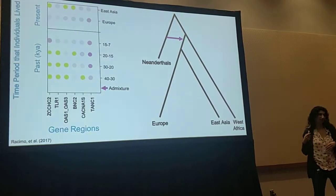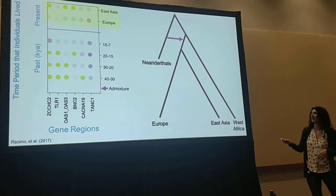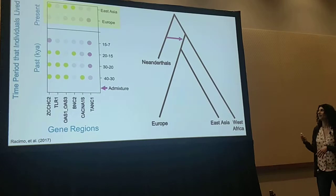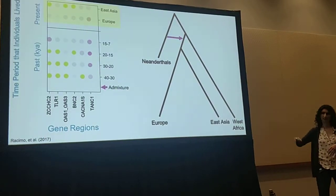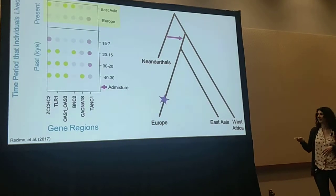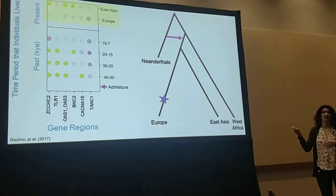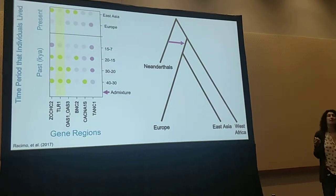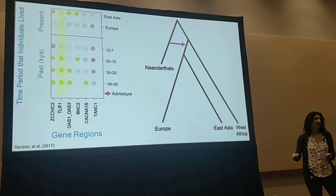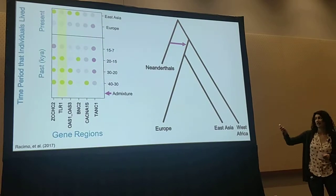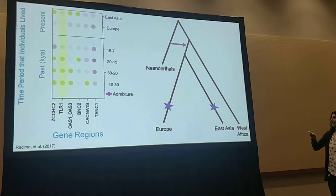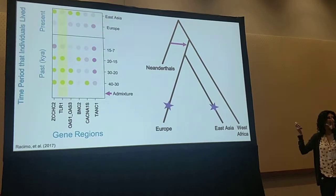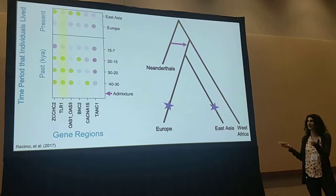Looking at present-day populations, I've selected regions in which we observe adaptive introgression in Europe, but we don't always observe adaptive introgression in East Asia. So it's possible that for those regions, selection must have occurred in Europe after Europeans diverged from East Asians. And even if we observe adaptive introgression in both Europeans and East Asians, if we look in the past, it appears that the Neanderthal allele didn't rise in frequency until much more recently — suggesting independent selection in Europeans and East Asians with an intermediate neutrality period.